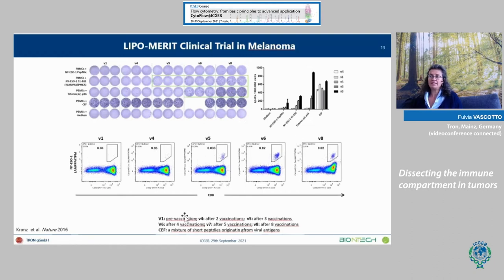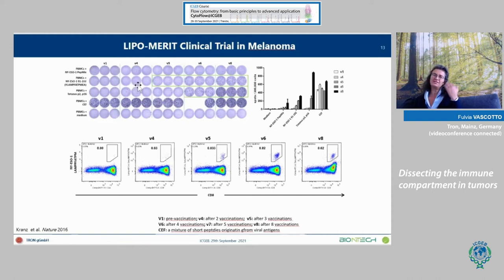In humans, these preliminary data show that following different vaccinations we are able to detect T cells specific for the antigen encoded by the mRNA encapsulated in the vaccine — in this case a fixed vaccine. This is the platform I wanted to show you: it covers both cancer neoantigens and fixed cancer antigens for cancer patients.